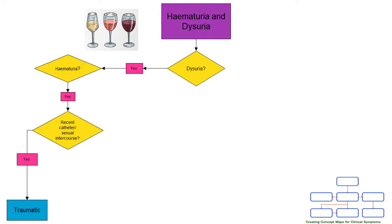We now look at a patient who has dysuria and haematuria, and you elicit from the history that they've had either a recent catheterisation or sexual intercourse. We can attribute these symptoms to trauma.